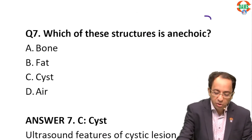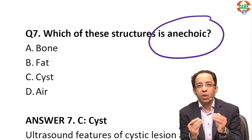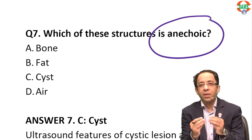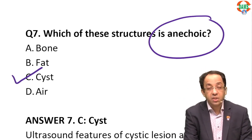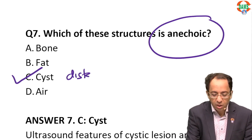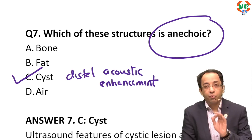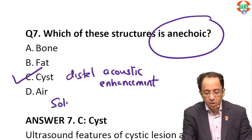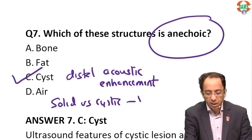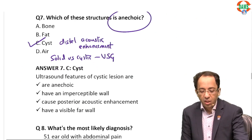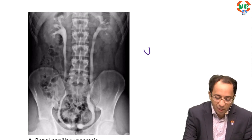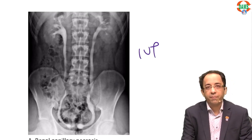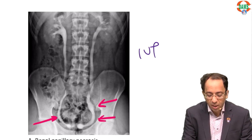Which of the following is anechoic? Any structure full of water will be anechoic on ultrasound, because water allows sound to transmit and does not reflect it. Cystic lesions are anechoic and also show distal acoustic enhancement. Always remember: to differentiate solid versus cystic lesions, the investigation of choice is ultrasound.